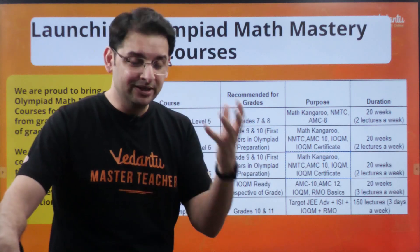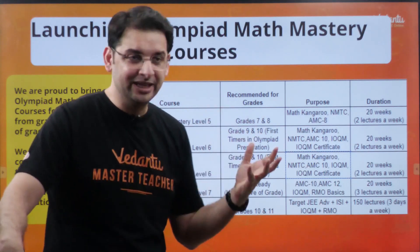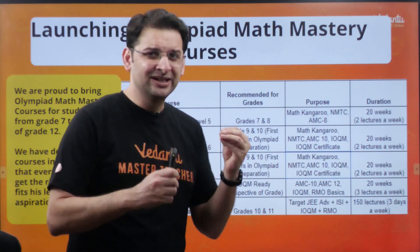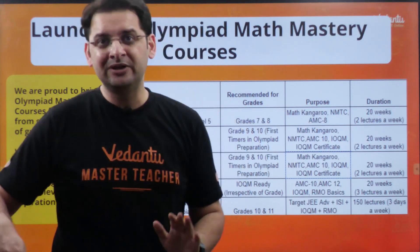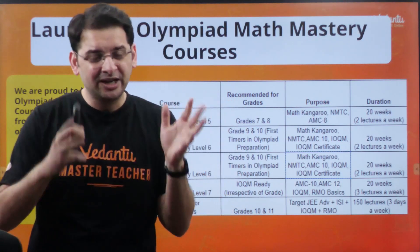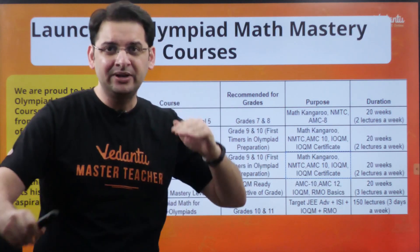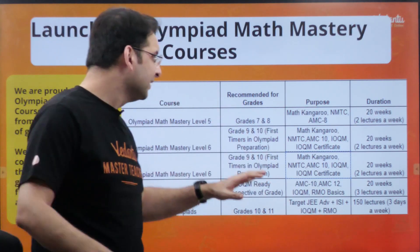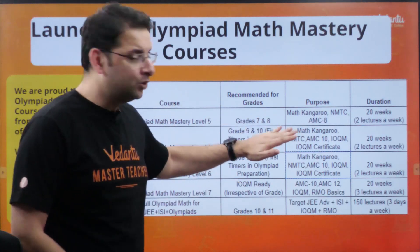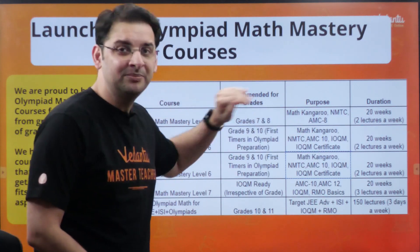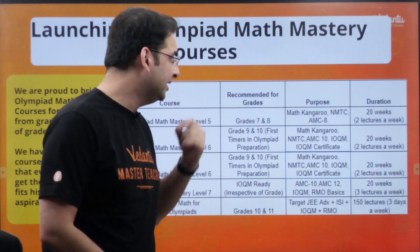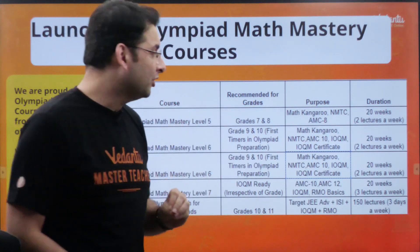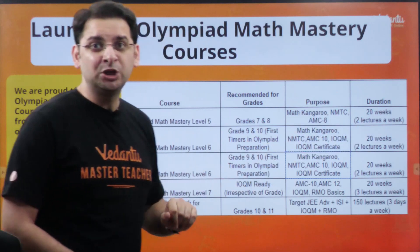Level 6 is particularly for those students who are preparing for olympiads for the first time — jo pehli baar olympiad ko touch kiya hai. Otherwise if you go directly to the IOQM level, a lot of students struggle. So this is a kind of mid-level between school math and the IOQM level. The purpose of this course is to help students clear Mathematics Kangaroo, NMTC, AMC 10, IOQM, and to get them the IOQM certificate. The course is again 20 weeks, two lectures a week.